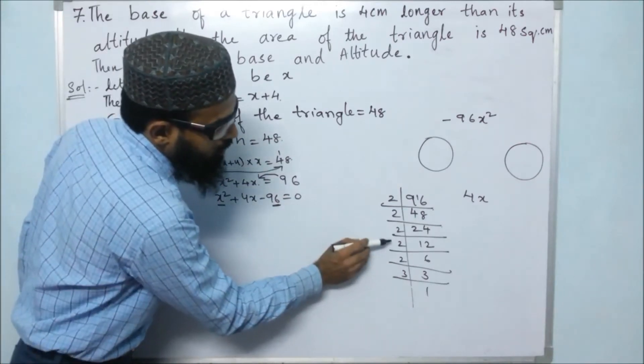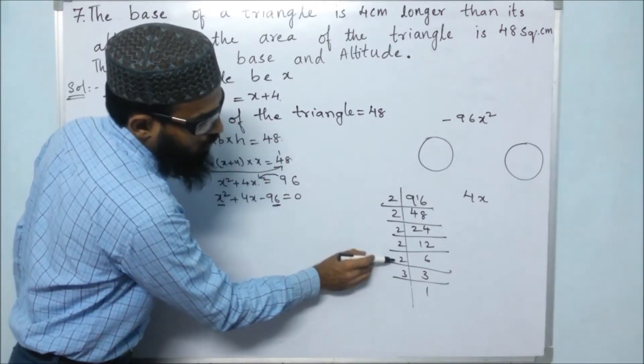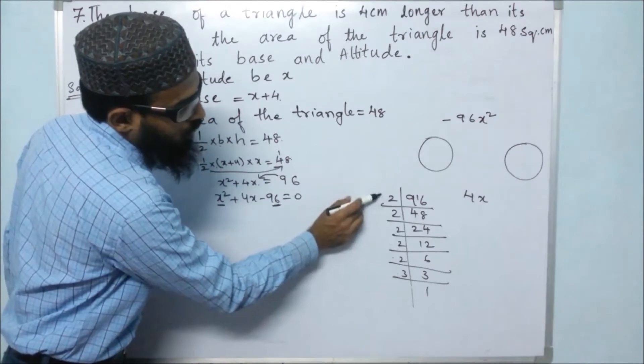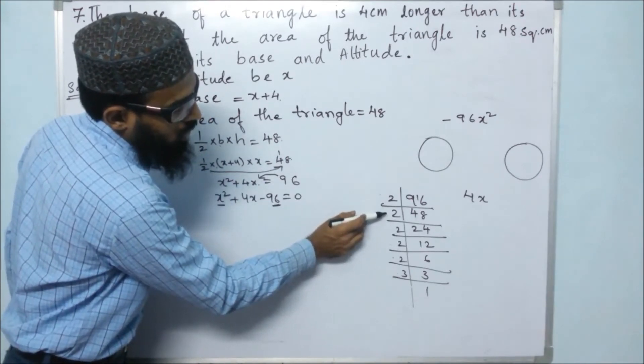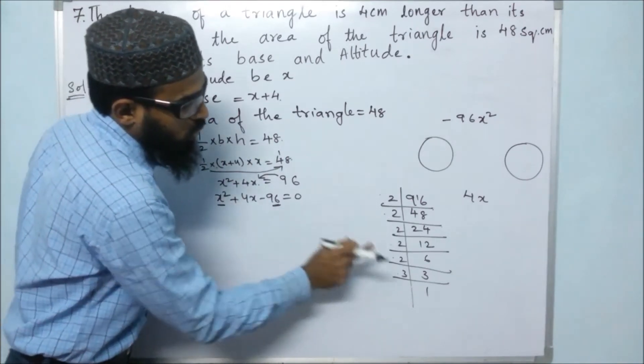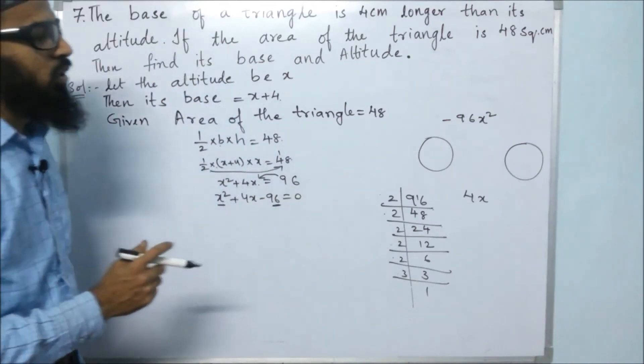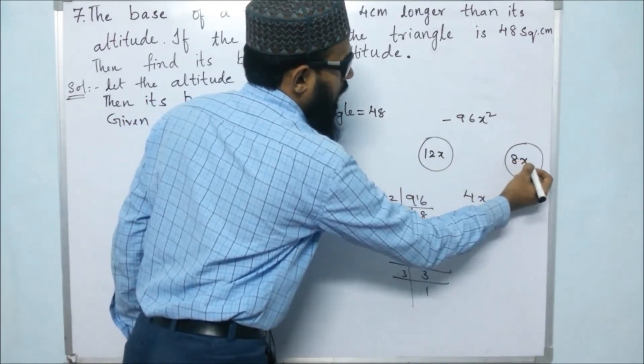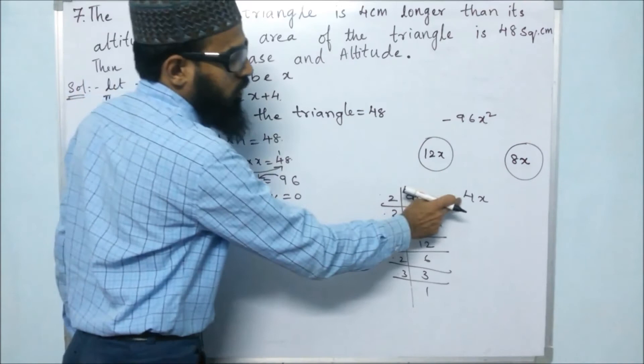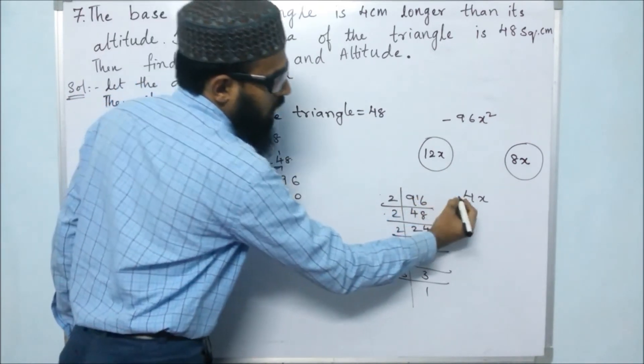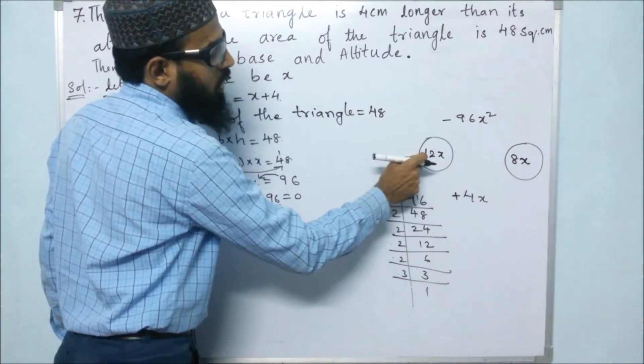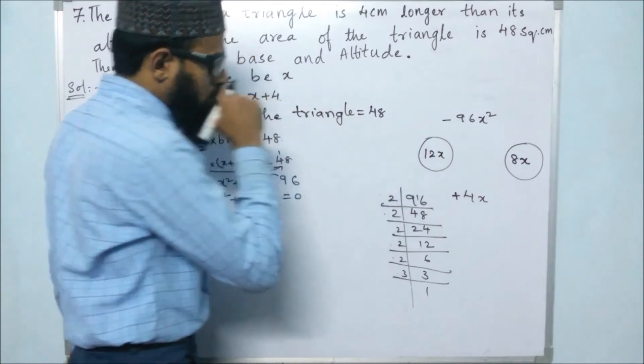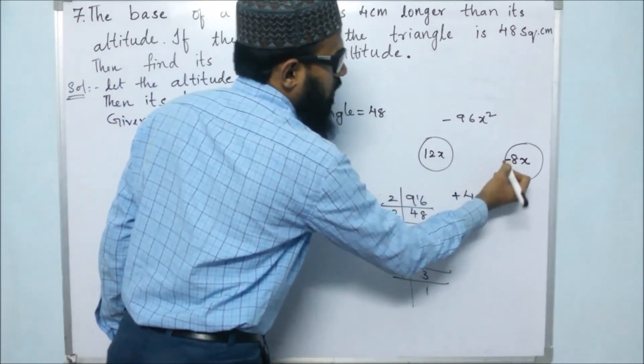So if you see here, 2 twos are 4, 4 threes are 12. So 12 minus 8 can be 4. So 12x and 8x. But if you see the sign of this, the sign is plus. So the number with the big value will be plus and the other one will be negative.